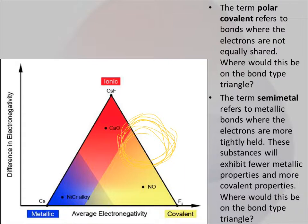Semi-metals are another one. So this is where metallic bonds have electrons and they hold them more tightly. They're going to exhibit fewer metallic properties and more covalent properties. And these are kind of your in-between right here.